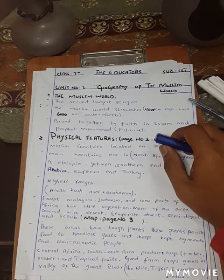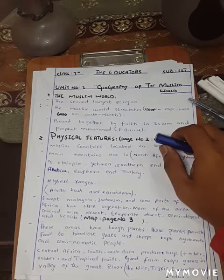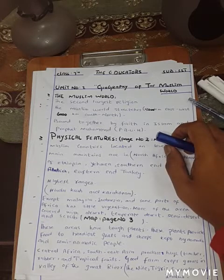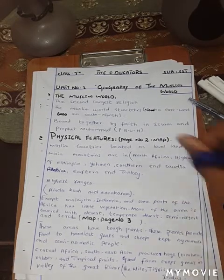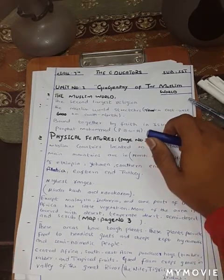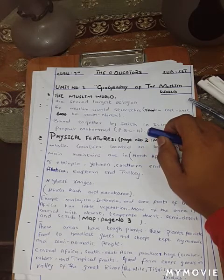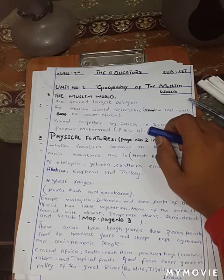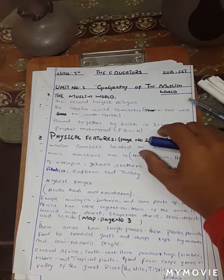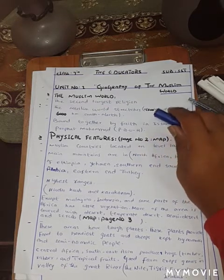Assalamu alaikum. Today we will study secondary social study, addition to Peter Moss for grade 7. The first section of this book is about geography. The first chapter is geography of the Muslim world. I prepared this lecture for my students to understand the chapter well. To understand the chapter well, they have to open their books and play my video to understand the lecture perfectly.